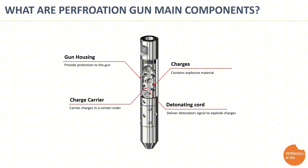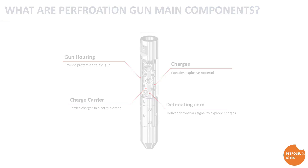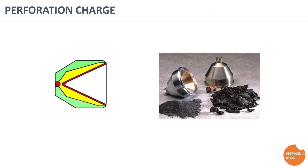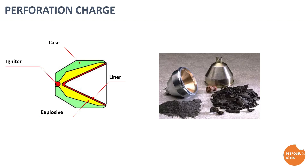Let's have a closer look at the shape charge to know what it's made of. The shape charge has an outer case shell that houses the explosive material, which is held in place by a conical liner. The type of explosive is determined based on the downhole temperature and the time the explosive will remain under that temperature before executing the perforation job. The igniter starts the ignition in the explosive after receiving the detonation signal.